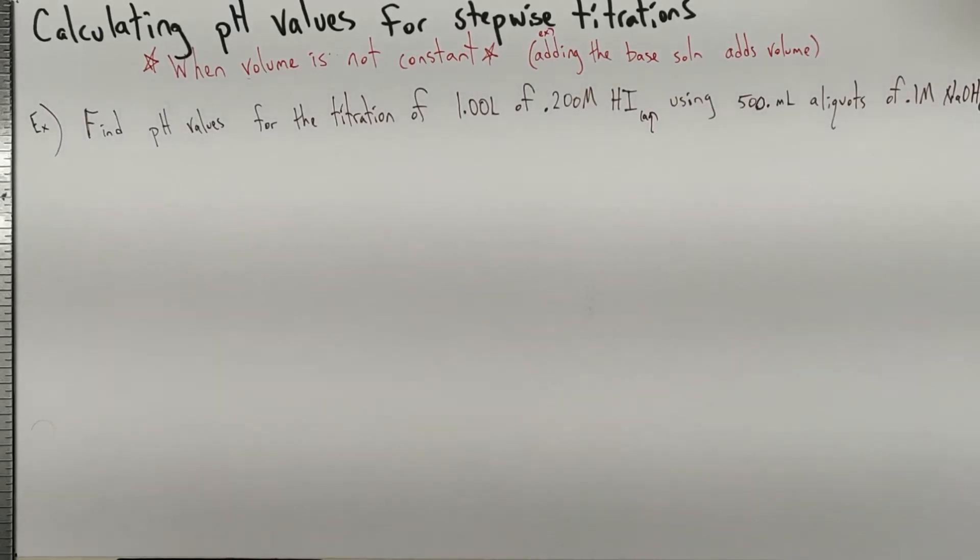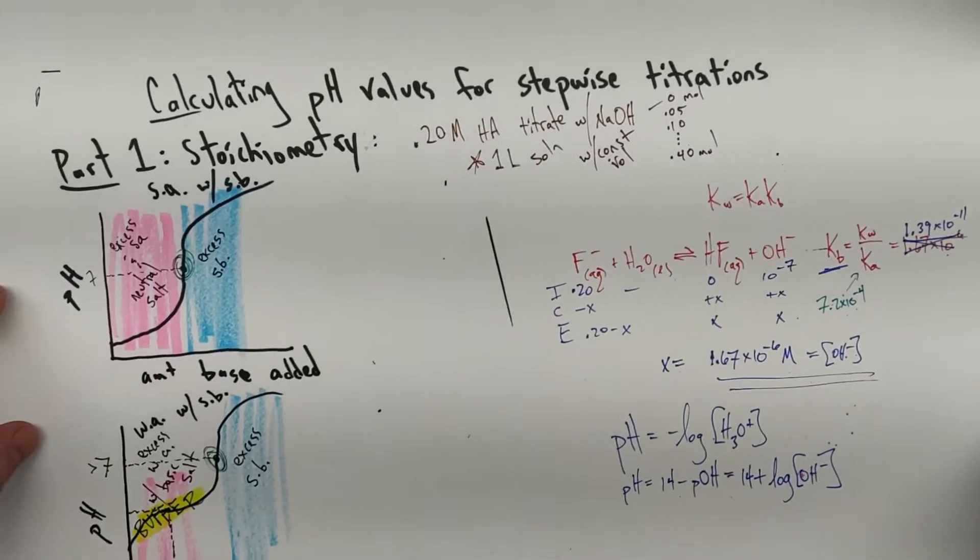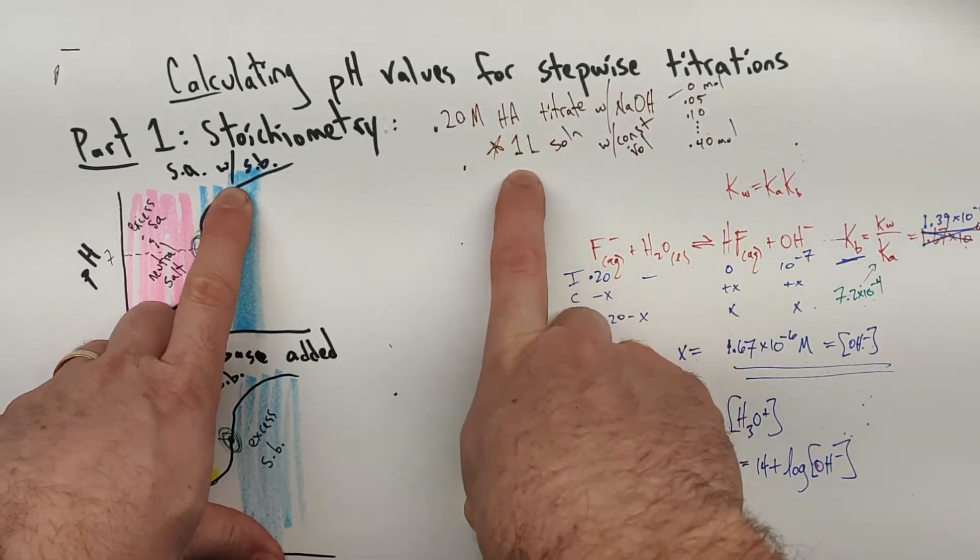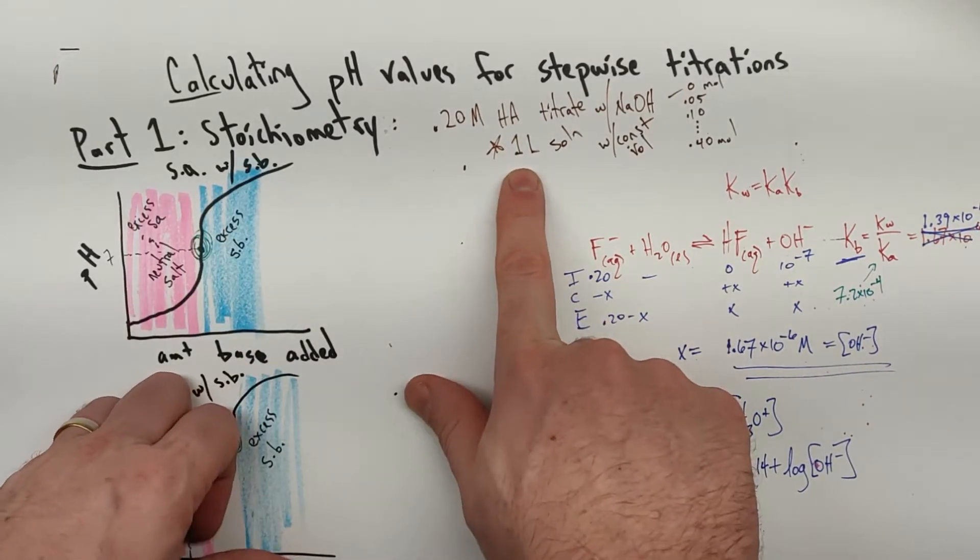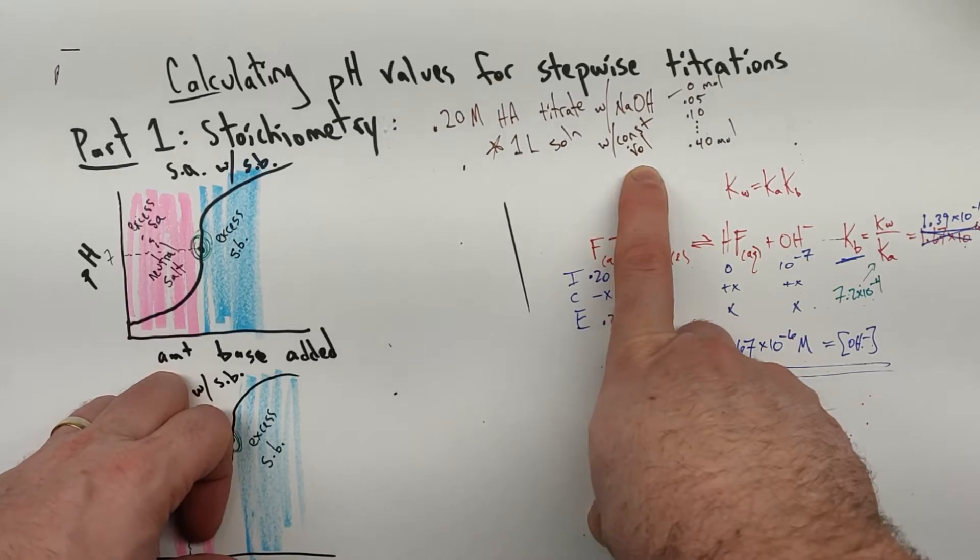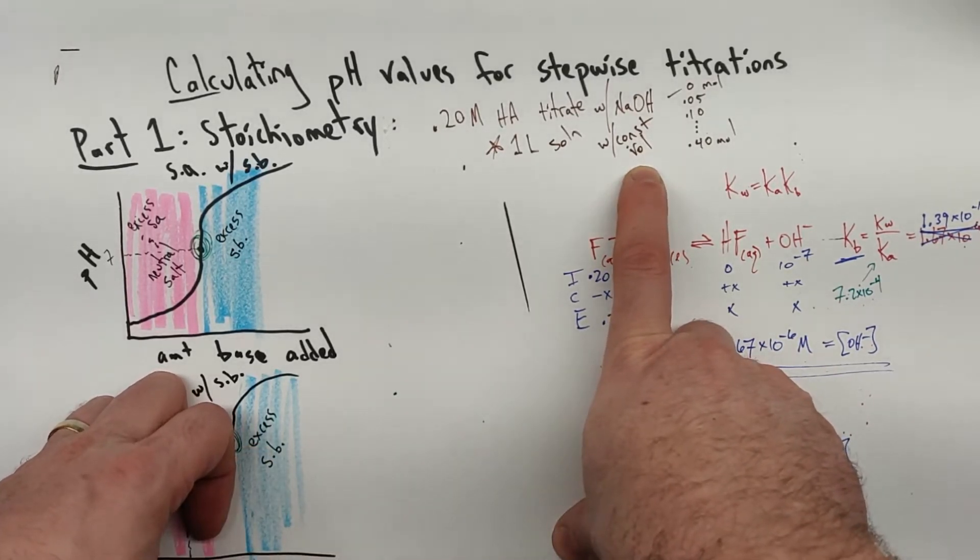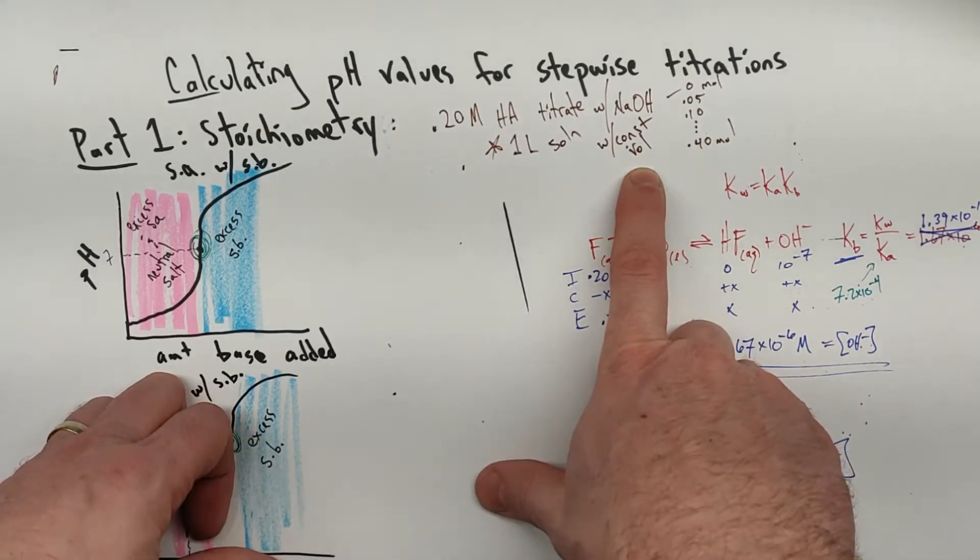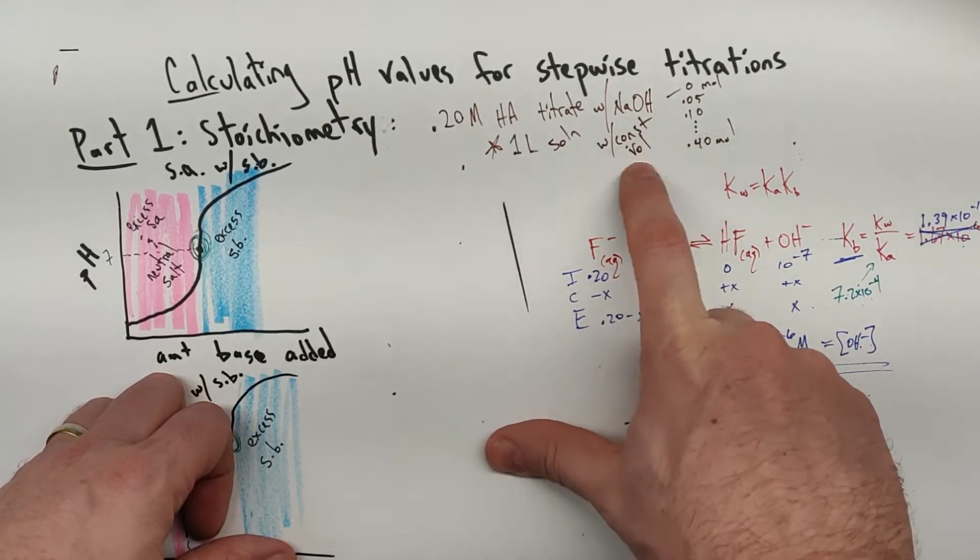I would be remiss if I didn't follow up the last video with a video that has more realistic calculations. For our 0.2 molar HA, we declared it was going to be in a 1 liter solution and I was going to add sodium hydroxide in a way that the volume didn't change.